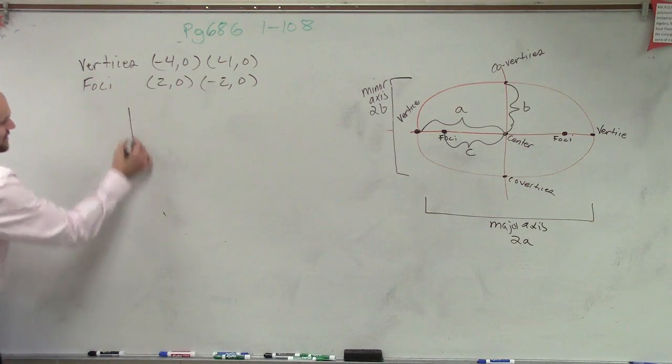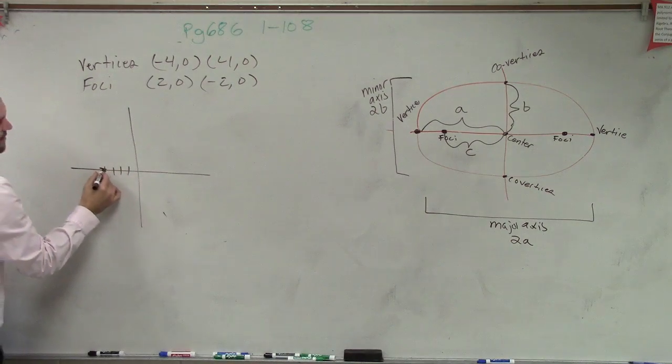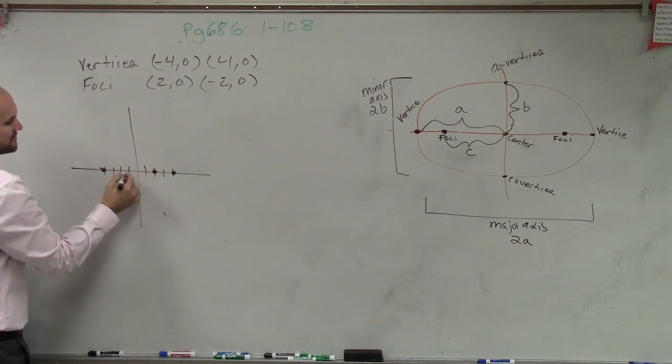So let's plot these points. Vertices at negative 4, 0, and 4, 0. Foci is at 2, 0 and negative 2, 0.